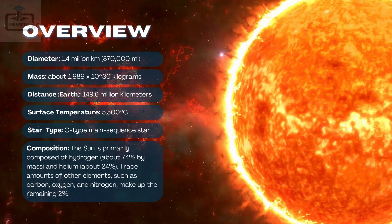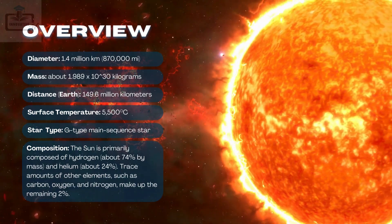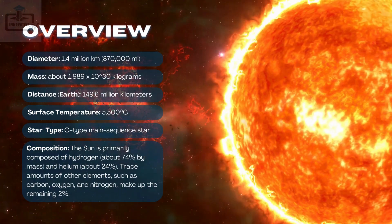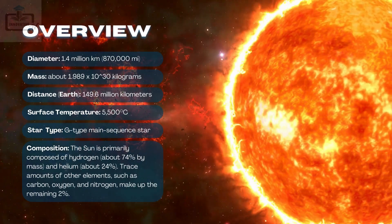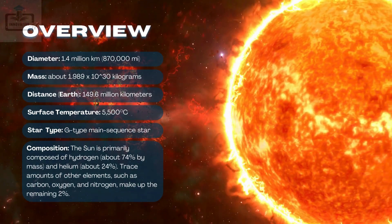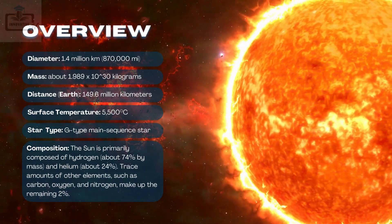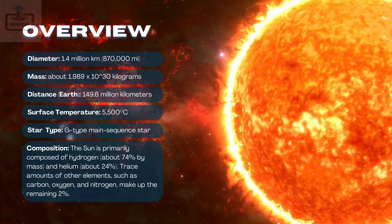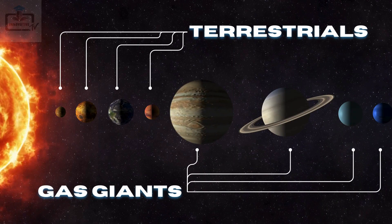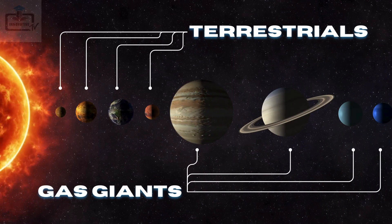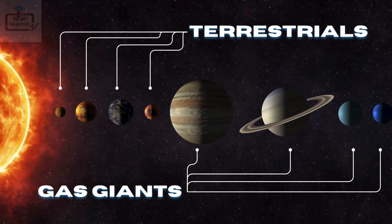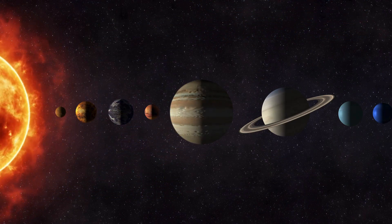Composition: The Sun is primarily composed of hydrogen, about 74% by mass, and helium, about 24%. Trace amounts of other elements such as carbon, oxygen, and nitrogen make up the remaining 2%. The planets on the left belong to the terrestrial family, whereas the planets on the right belong to the gas giant family.